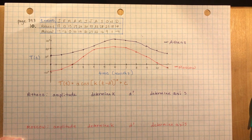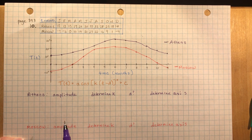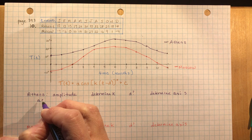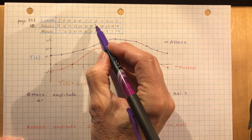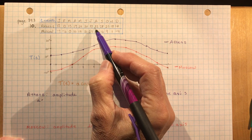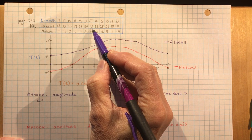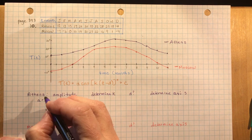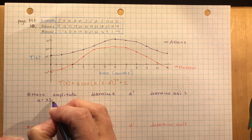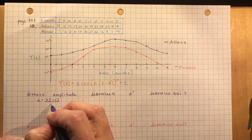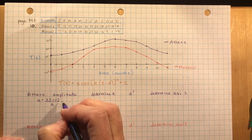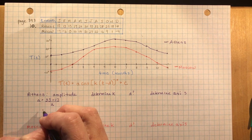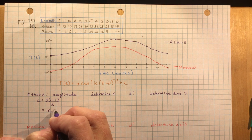For Athens, the amplitude requires the highest and lowest points. The highest temperature is 33 (at time 6, i.e., July), and the lowest is 12. Amplitude = (33 − 12) ÷ 2 = 21 ÷ 2 = 10.5.